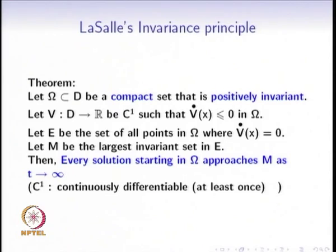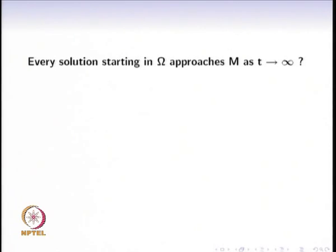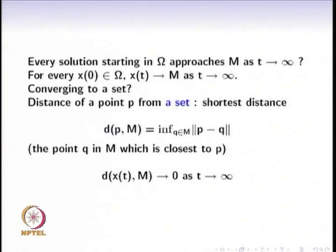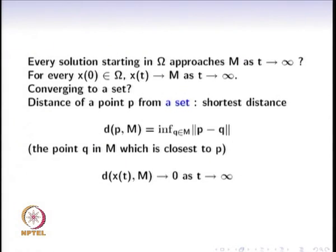If these conditions are satisfied, then every solution starting in omega approaches the set M as t tends to infinity. The invariance principle says that for every initial condition, the trajectory converges to M. The distance of a point P from a set is defined as the shortest distance from P to points in M. As x evolves as a function of time, the distance of x from the set M decreases as t tends to infinity. That is the statement of LaSalle's invariance principle.